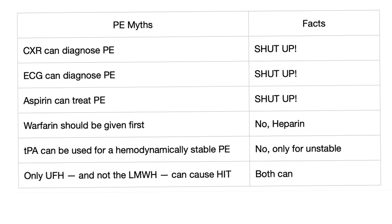Regarding pulmonary embolism, let's debunk some myths. Number one: chest X-ray can diagnose PE — it cannot. EKG can diagnose PE — it cannot. Aspirin can treat PE — it cannot; aspirin may prevent some clots but cannot treat an active clot. We should give warfarin first — no, heparin first; it's called the heparin bridge. If you give warfarin first, it's pro-coagulant in the beginning and the patient can end up with skin necrosis and die from the clot.